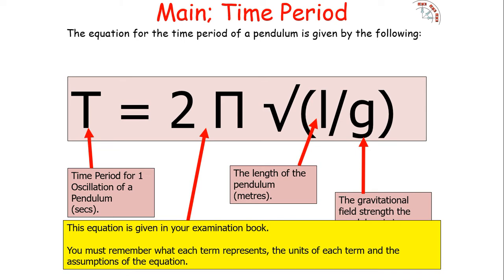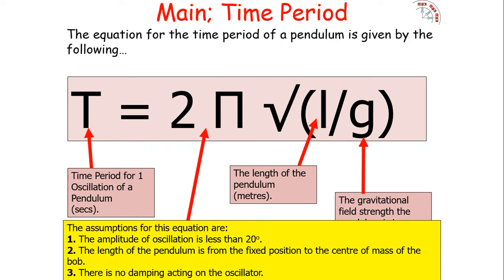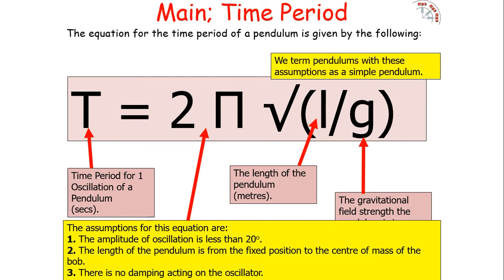Remember what each term represents, its units, and the assumptions of the equation. The assumptions are: the amplitude of oscillation is less than 20 degrees (we tend to say less than 10 degrees); the length of the pendulum is measured from the fixed position to the centre of mass of the pendulum bob; and there are no dampening forces acting on the pendulum. Pendulums satisfying these assumptions are termed simple pendulums; complex pendulums do not have these assumptions.